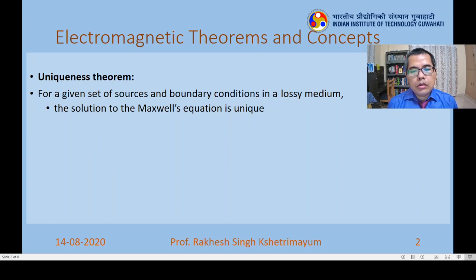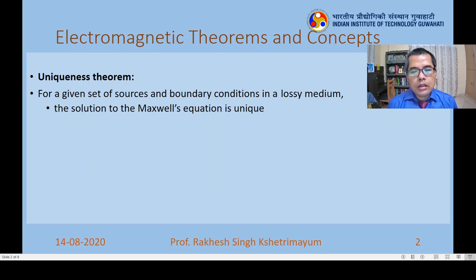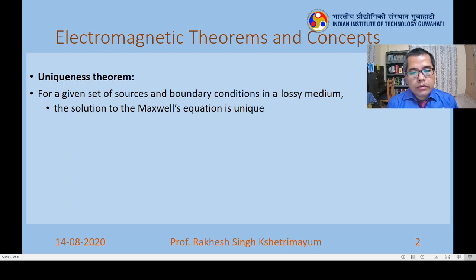In a lossy medium, the solution to the Maxwell equation is unique. There are two very important points to be noted: one is that the solution to the problem comes from the Maxwell equation, and another is that you apply the boundary conditions. So you get a solution to the Maxwell equation and apply the boundary conditions — the solution is always unique. Any kind of solution you find using this procedure is always unique.